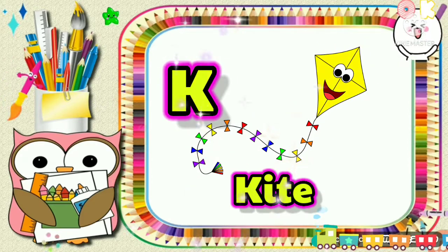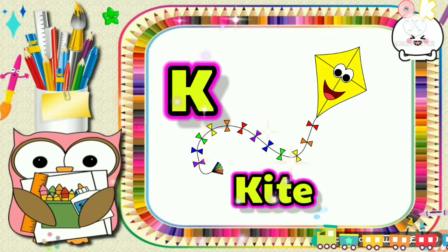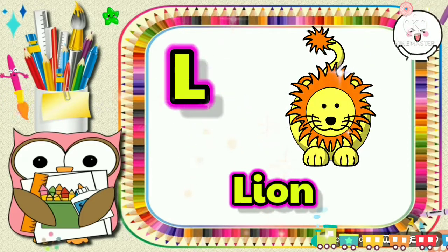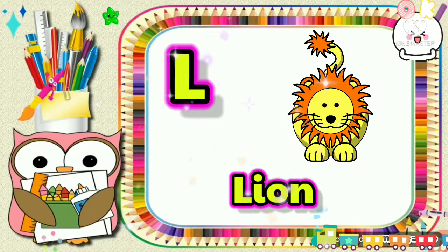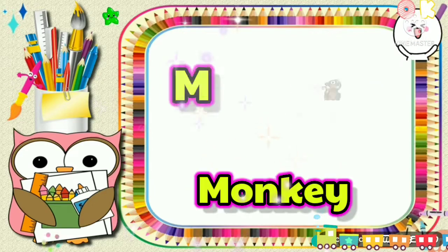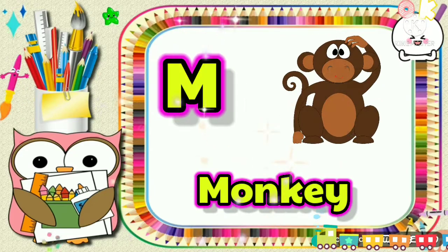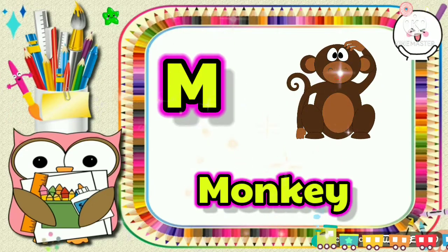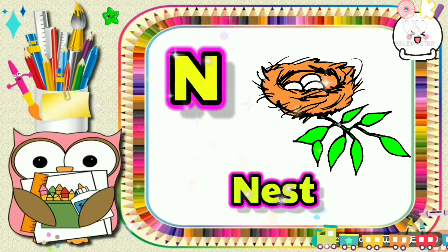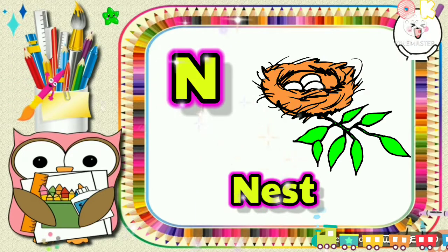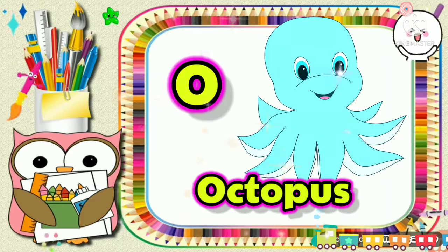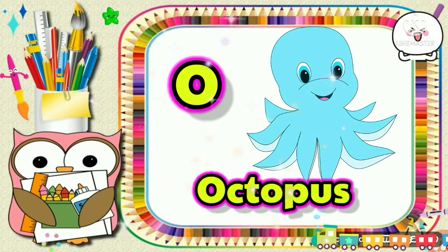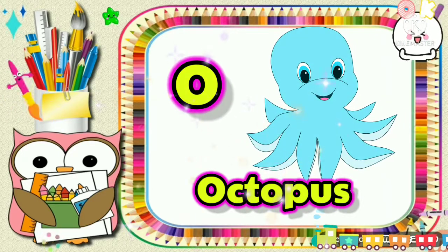K for kite, L for lion, M for monkey, N for nest, O for octopus.